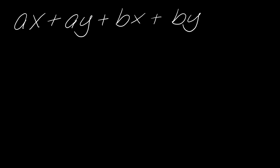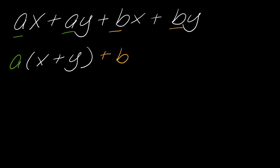So here's what we're going to do. I notice I've got 'a' in common in these first two terms. I'm going to factor the 'a' out of the first two terms. If I do that, what am I left with? x plus y. Now what about the second two terms? What do I have in common? I have the b's in common. So I'm going to factor the 'b' out of these two terms, and once again I'm left with x plus y.